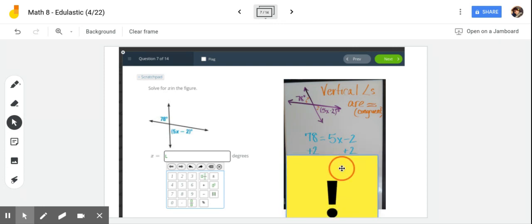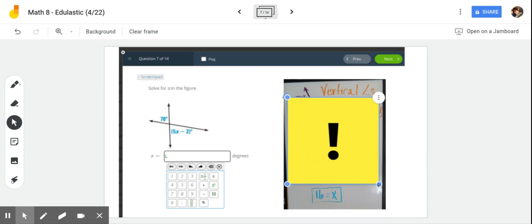So I'm going to set up my equation: 78 is equal to 5x minus 2. And then I'm going to solve for x. Oh it's z, I used x, sorry. I'm going to add 2 to both sides and I get 80 equals 5z. Oh, I can get rid of it now, okay. So I have 80 equals 5z. Divide both sides by 5 to get rid of the coefficient 5, and I find out that z is equal to 16.